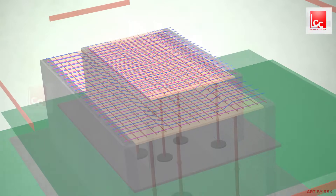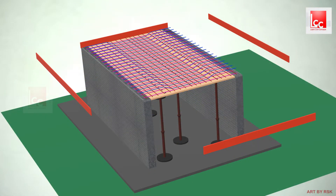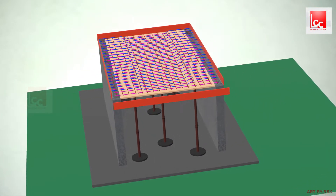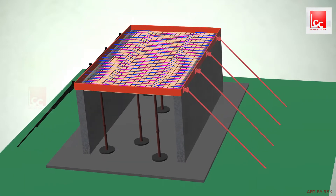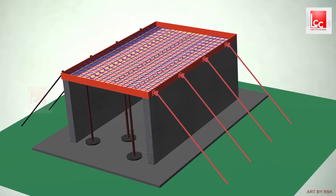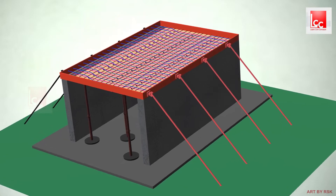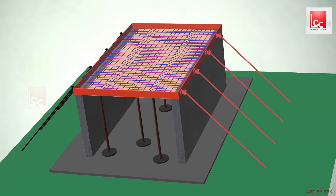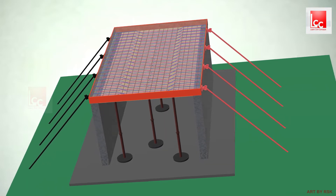Now we will complete our formwork to make the slab ready for casting so that concrete does not leak. Once the formwork is completed, our slab is ready for casting and we will put the concrete in the slab.